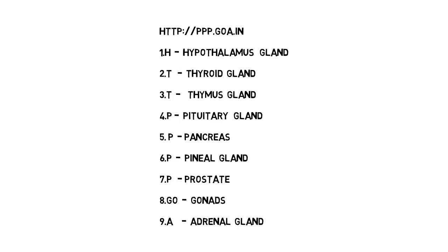Now let us go for GOA. In GOA, the first two letters G-O stand for Gonads gland, and A stands for Adrenal gland. And all these are endocrine glands — endo means inside, inside means 'in'. In this way, we have covered all the nine endocrine glands in this website name.